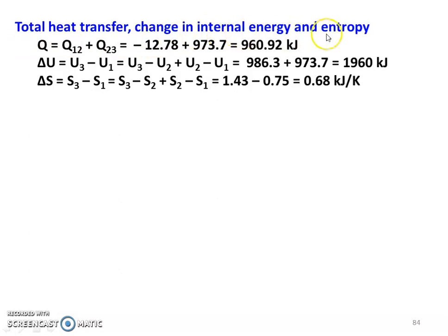The total heat transfer, change in internal energy and entropy for the process: Q equal to Q12 plus Q23, minus 12.78 plus 973.7 equal to 960.92 kilojoules. Delta U equal to U3 minus U1, which is U3 minus U2 plus U2 minus U1. Adding the two processes, change in internal energy: 986.3 plus 973.7 equal to 1960 kilojoules. Delta S, S3 minus S1 equal to S3 minus S2 plus S2 minus S1, 1.43 minus 0.75 equal to 0.68 kilojoules per Kelvin.